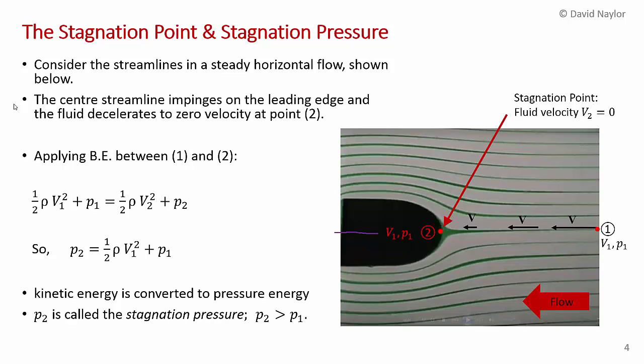So as it says in the statement here, on the center line, the center line streamline impinges on the leading edge of the object, and the fluid decelerates to zero velocity at point 2. So we can apply, as we always do, Bernoulli's equation, at point 1 and point 2, and we're going to ignore changes in elevation, so there's no z term, and we get 1 half rho v squared plus p1.